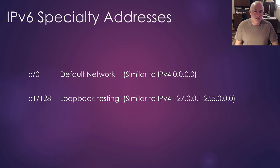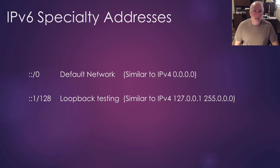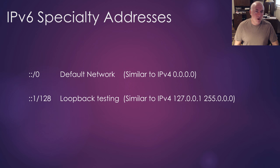Let's talk about some IPv6 specialty addresses. In IPv4, we had that quad-zero address 0.0.0.0 — that was the global network ID, the very first IPv4 address. The very last one was 255.255.255.255, which was broadcast. We don't have broadcast, so we don't have an equivalent to that. But we still do have a default network ID — in IPv6 it's colon-colon slash zero. That double colon can represent any consecutive number of all-zero hexets, so you have eight all-zero hexets or 128 zeros with a slash-zero prefix length. Your loopback testing address in IPv4 was 127.0.0.1; with IPv6 it's colon-colon 1 slash 128, which in binary is 127 zeros with a one and a slash-128 mask.